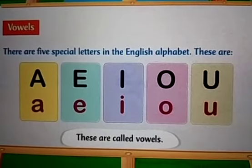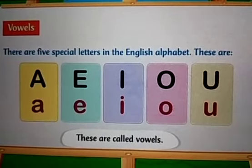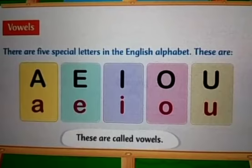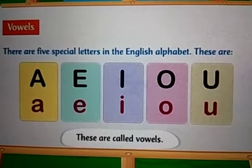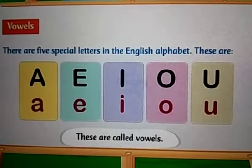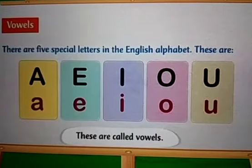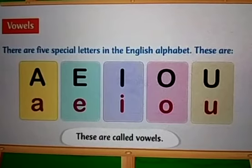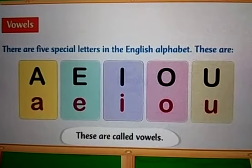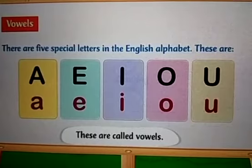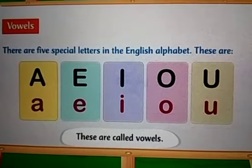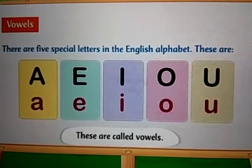The first one is vowels. There are five special letters in the English alphabet. These are A, E, I, O, U. These letters are called vowels.